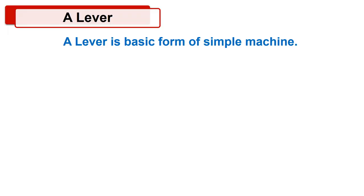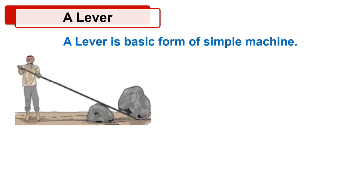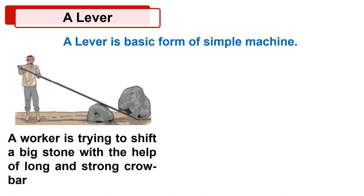Now let's see the next topic, a lever. A lever is one of the basic forms of simple machine. It helps us to lift loads with lesser effort. In the picture you can see a worker who is trying to shift a big stone with the help of a long and strong crowbar. Such a machine is called a lever.